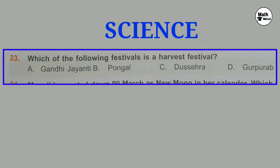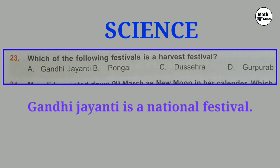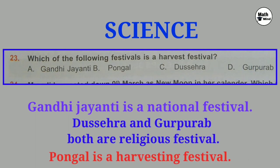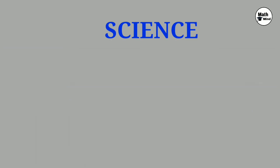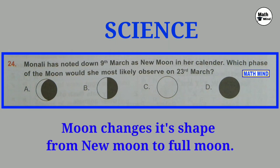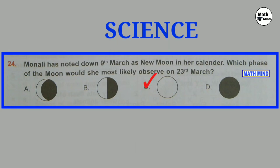Question number 23: Which of the following festivals is a harvest festival? Gandhi Jayanti is a national festival. Dussehra and Gurpurab are both religious festivals. Pongal is a harvest festival. So option B is correct. Question number 24: Monali has noted down 9th March as new moon in her calendar. Which phase of moon would she most likely observe on 23rd March? From 9th to 23rd March there are total 14 days. After 14 days from 9th March, moon changes its shape from new moon to full moon. So correct option is C.